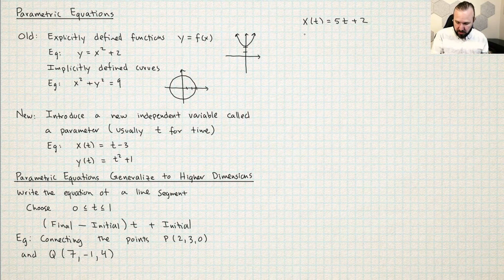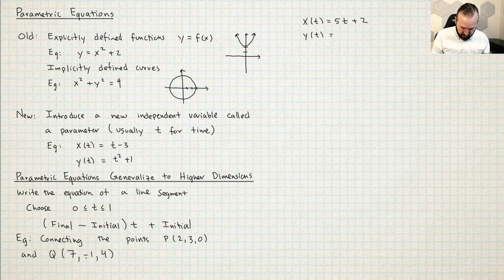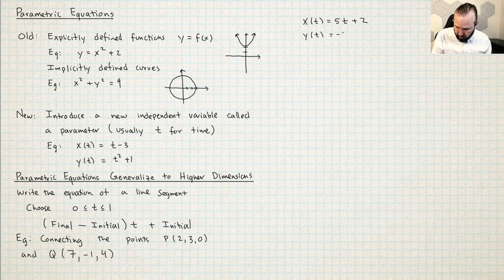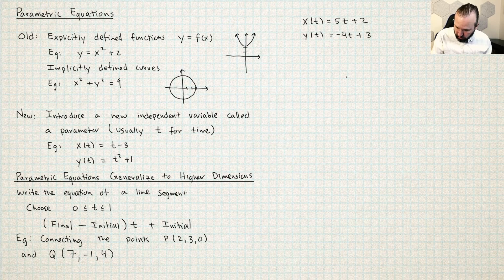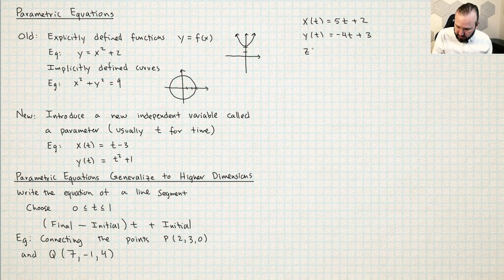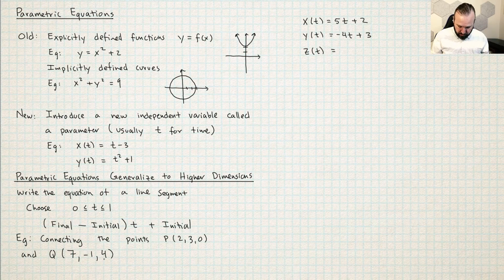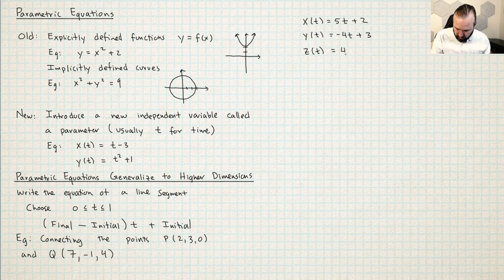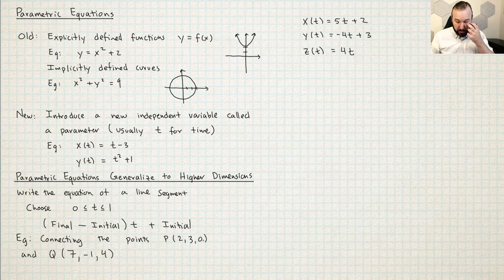See how that works. So I'll just repeat this process for the other ones. So y of t here, I need to do negative 1 minus 3. I'm getting negative 4t plus the initial point was 3. And then z of t, the last coordinate here is going to be 4 minus 0. That's 4t plus the initial point is zero here. So I'll just leave it 4t.